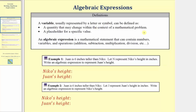A variable can also be defined as a placeholder for a specific value. An algebraic expression, sometimes called a variable expression, is a mathematical statement that can contain numbers, variables, and operations, such as addition, subtraction, multiplication, division, as well as other operations.